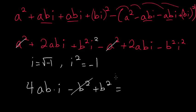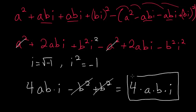So these b's cancel each other out, and we're left with 4 times a times b times i. And this here will be our final answer.